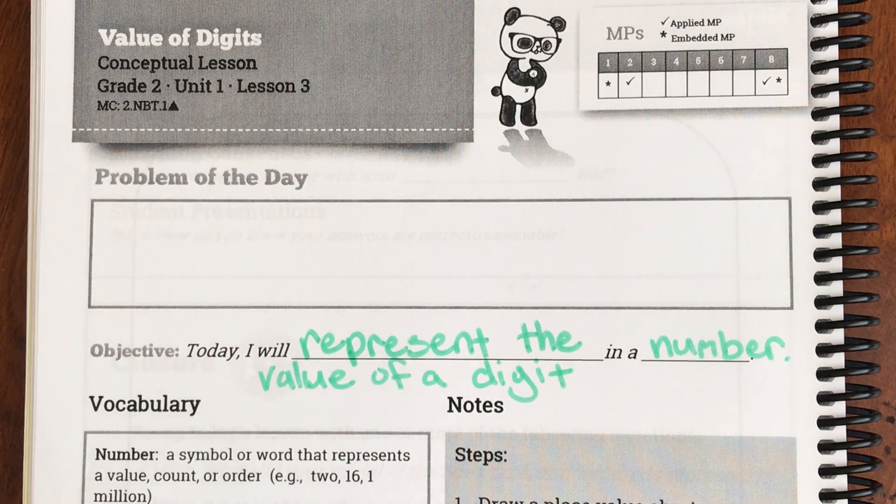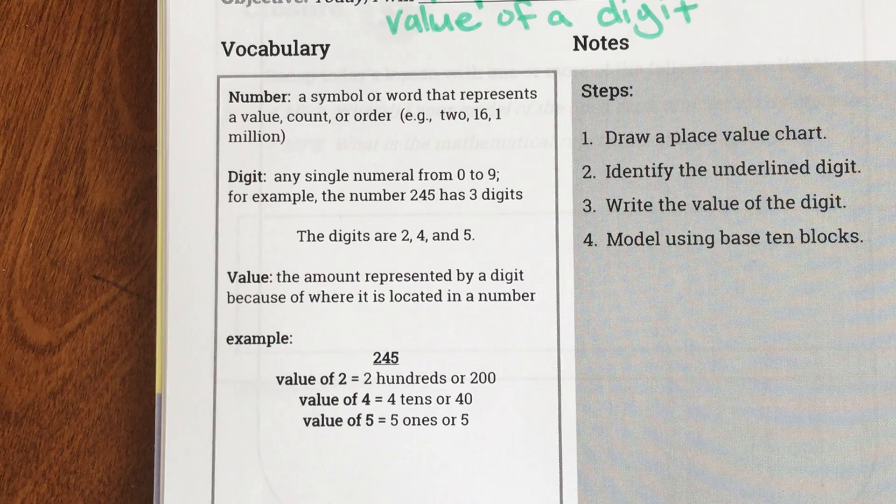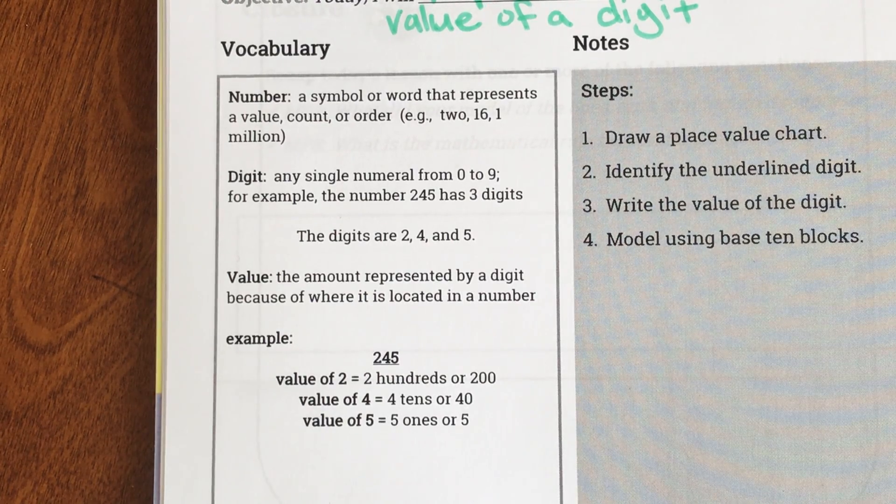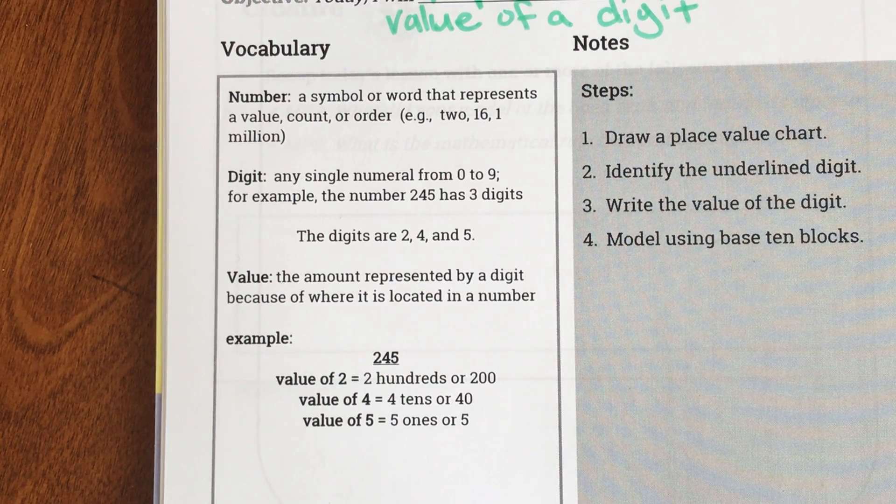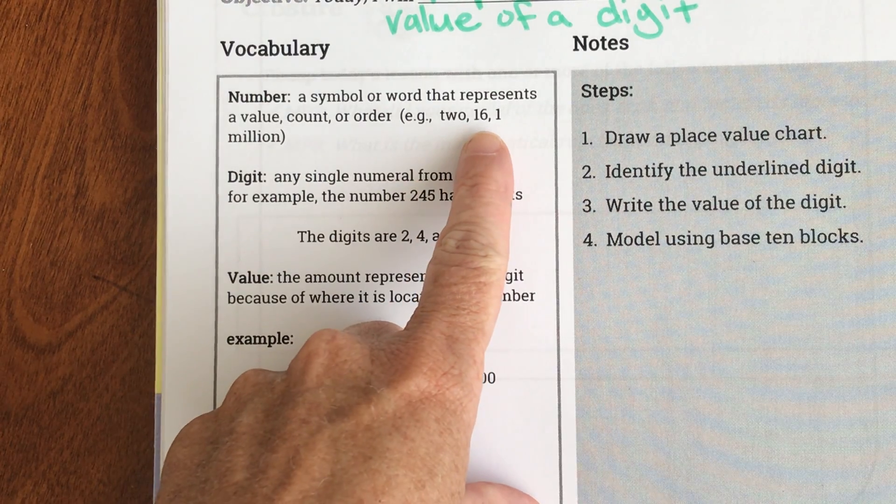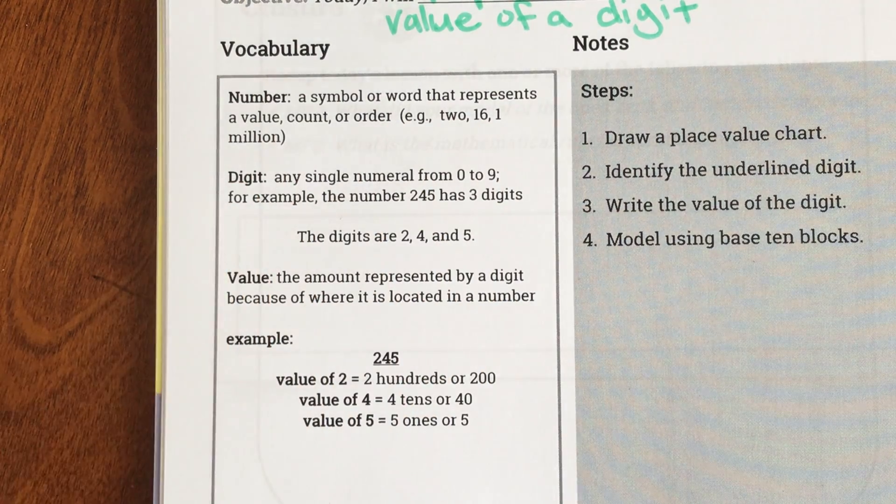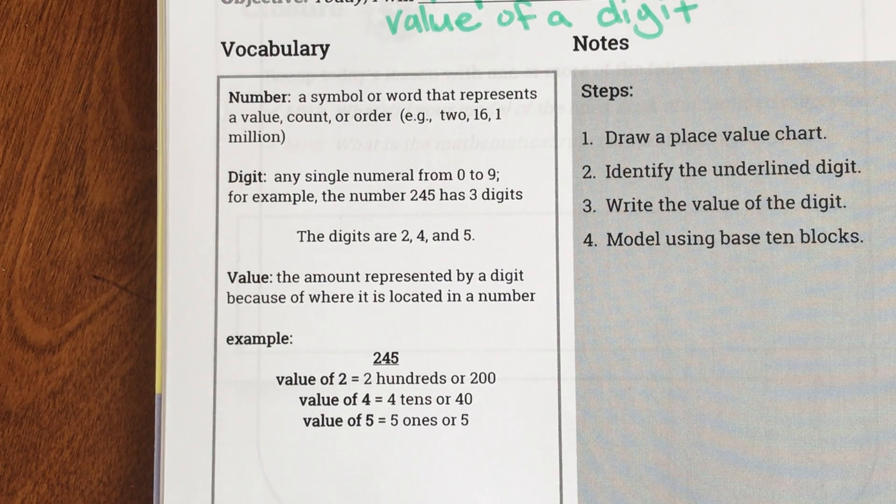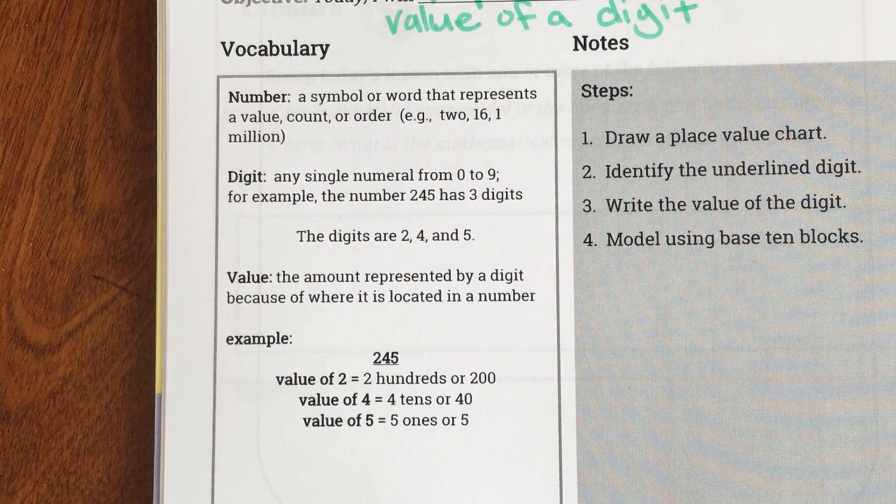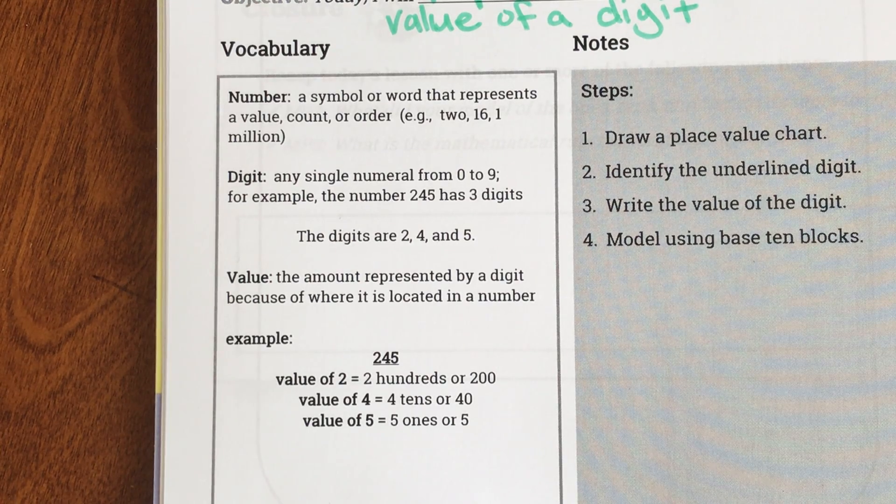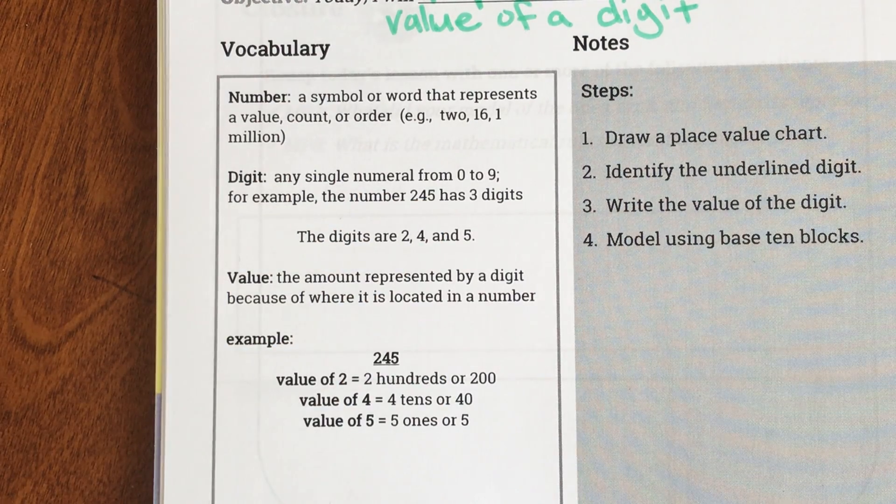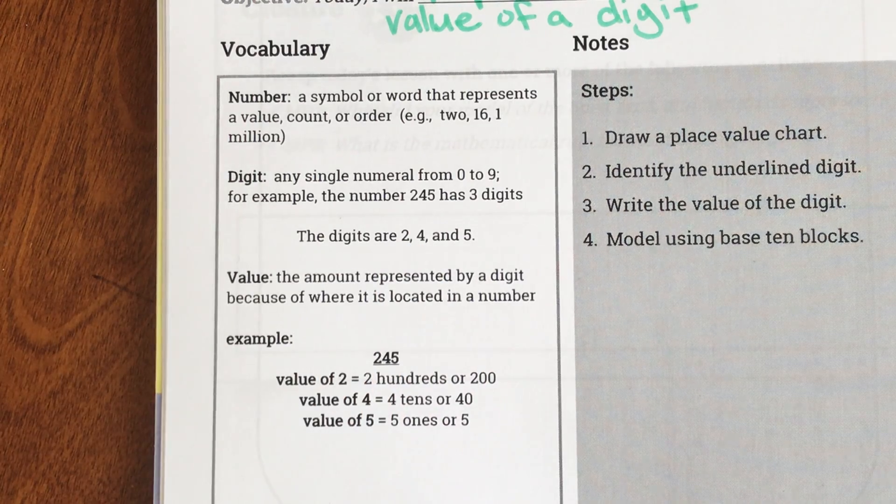Okay let's look at our vocabulary. So our first vocabulary word is number, and it says a symbol or word that represents a value, count, or order. For example, 2 written in word form or 16 in standard form or 1 million. Our next word is digit. It's any single numeral from 0 to 9. For example, the number 245 has three digits, so even though we call this a number 245, the number is made up of the digit 2, 4, and 5.